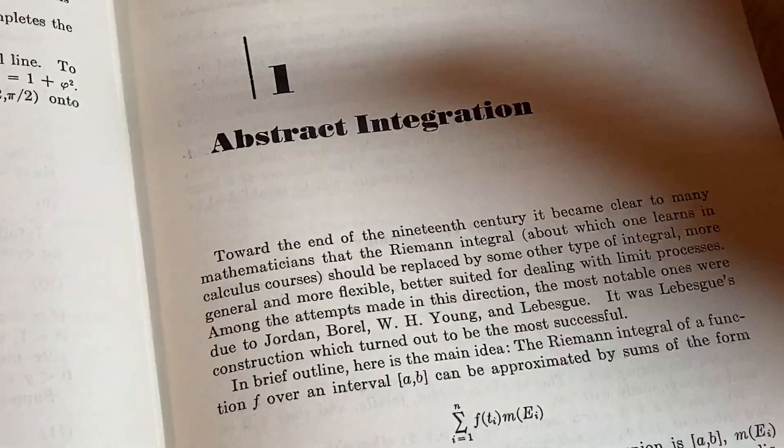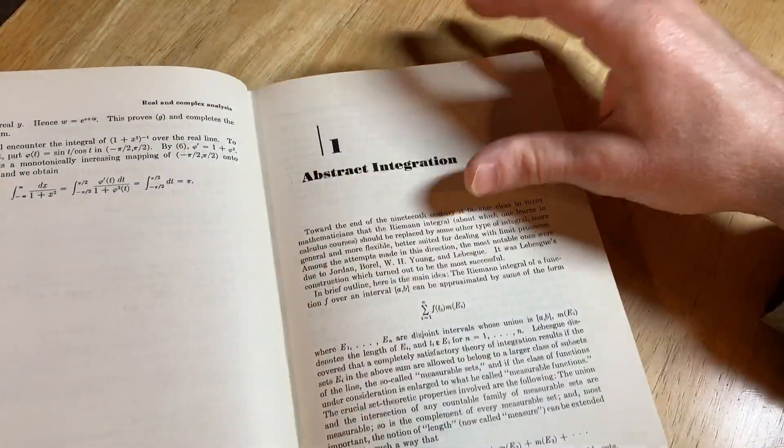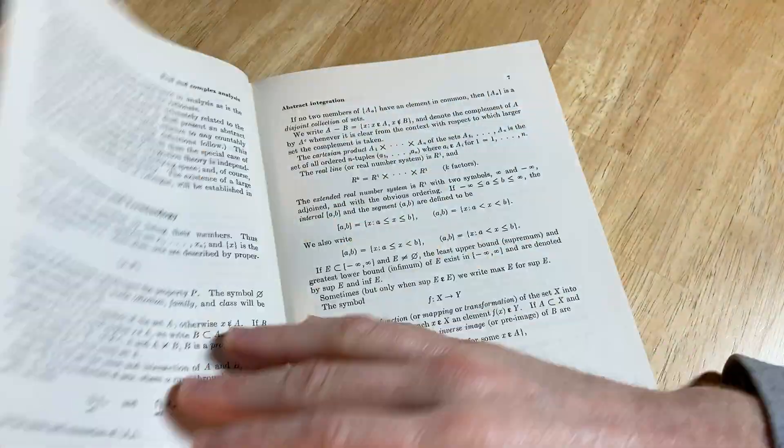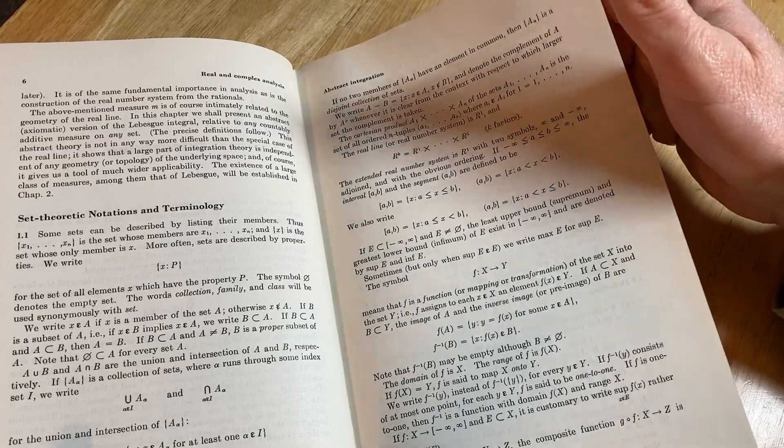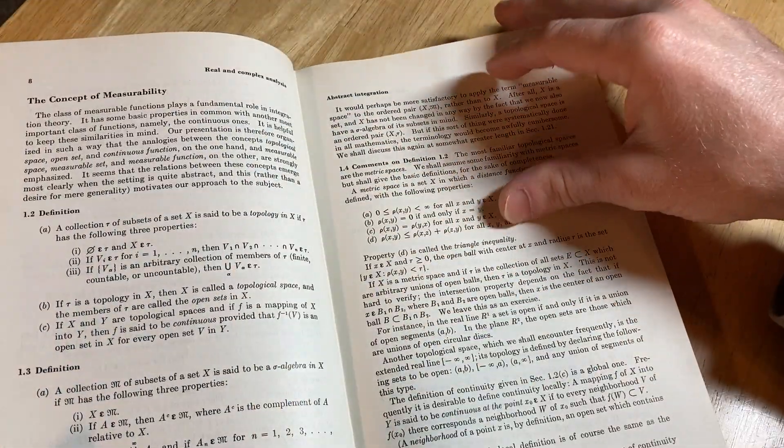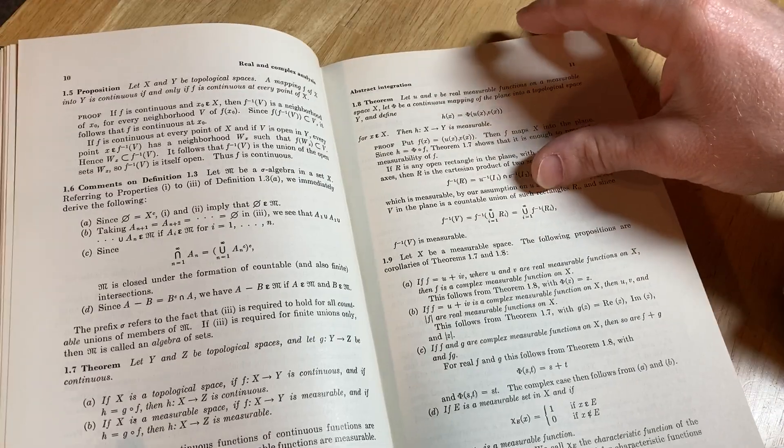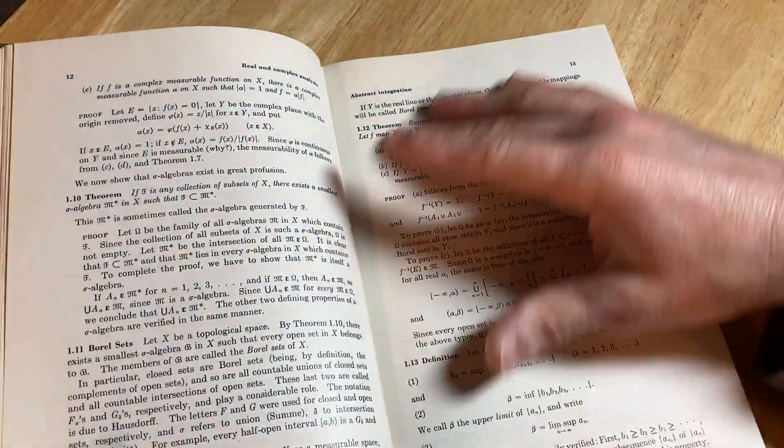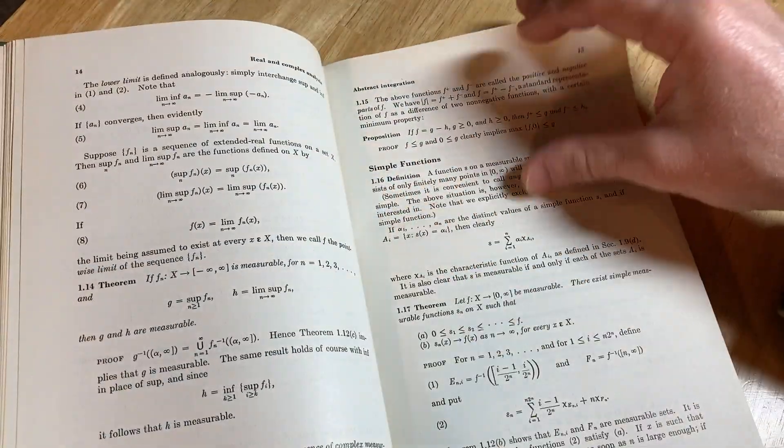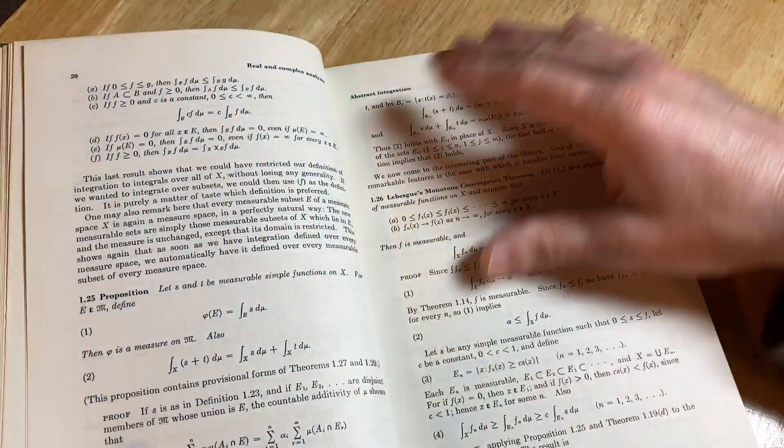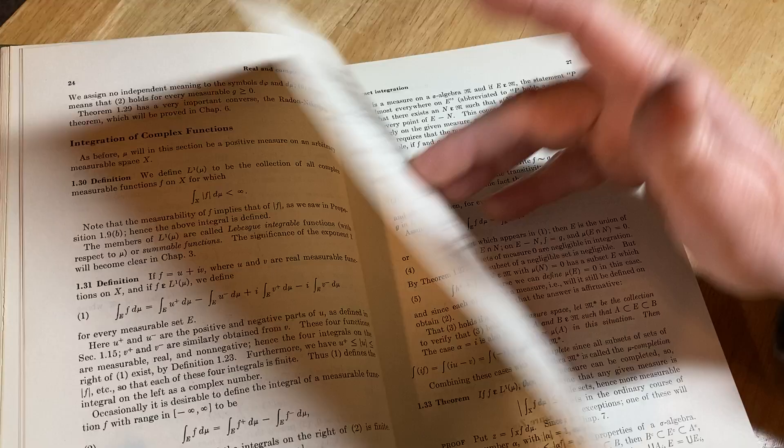Then you have abstract integration. That's really where the course starts. And you go through here, and you have some new definitions you have to get used to, and some new terminology. So a lot of it's going to depend on how comfortable you are reading math books and absorbing new math ideas. And that comes from doing a lot of math. So the more math you do, the easier it becomes to learn more math.